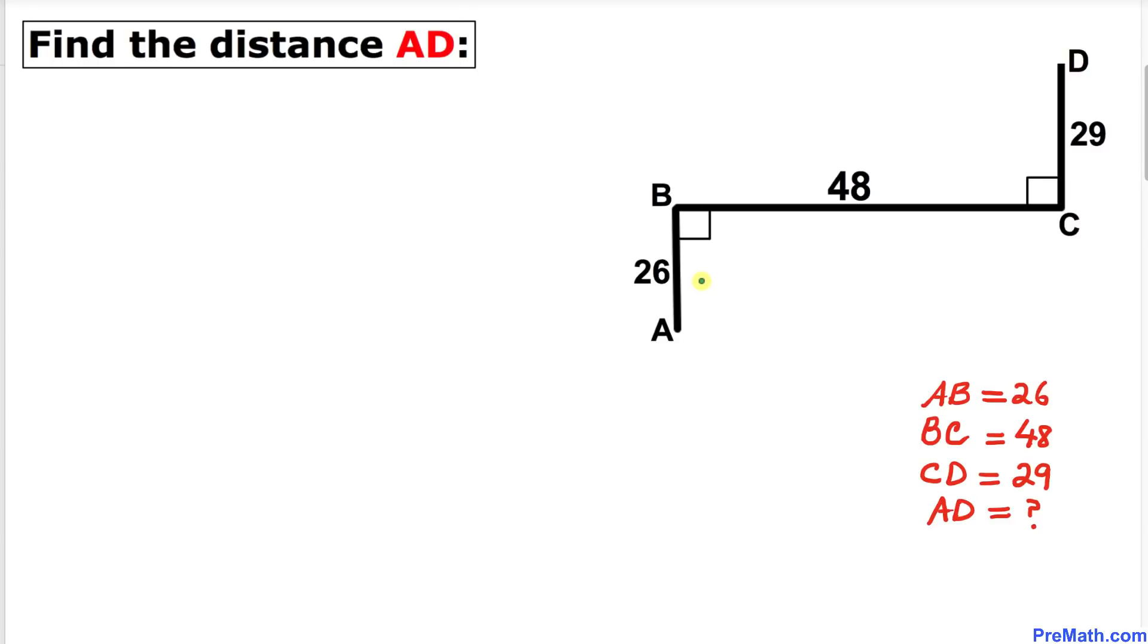Welcome to PreMath. In this video lesson we have this diagram such that line segment AB is 26, line segment BC is 48, and line segment CD is 29. Moreover, these line segments are perpendicular to each other as you can see in this figure. We are going to calculate the distance between points A and D.